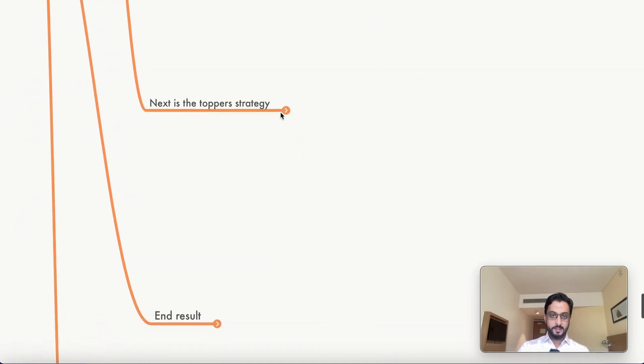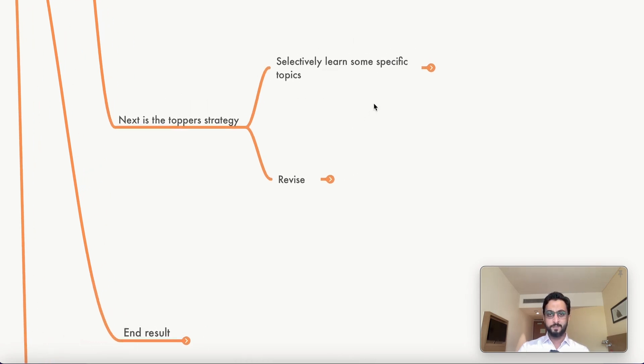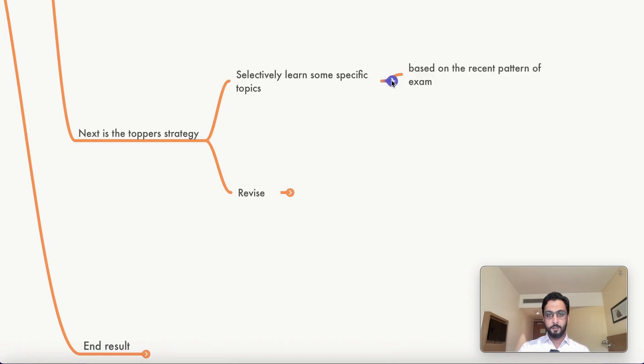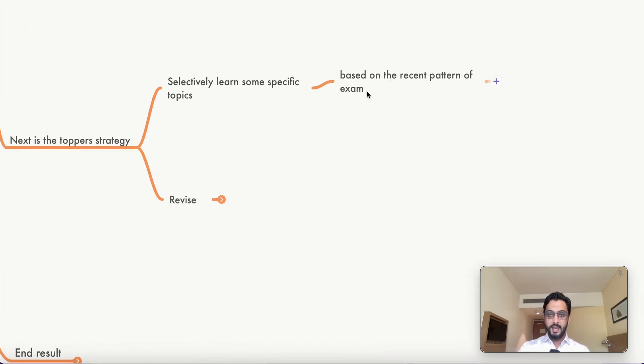Now, what is next? Next is the topper strategy. That is selectively learning some very specific topics. Now, how do you select that? How do you know these specific topics? Definitely guidance is the key there. And it is based on the recent pattern analysis. Now, it's very difficult when it comes to self-learning to learn this effectively. People either overdo it or underdo it.